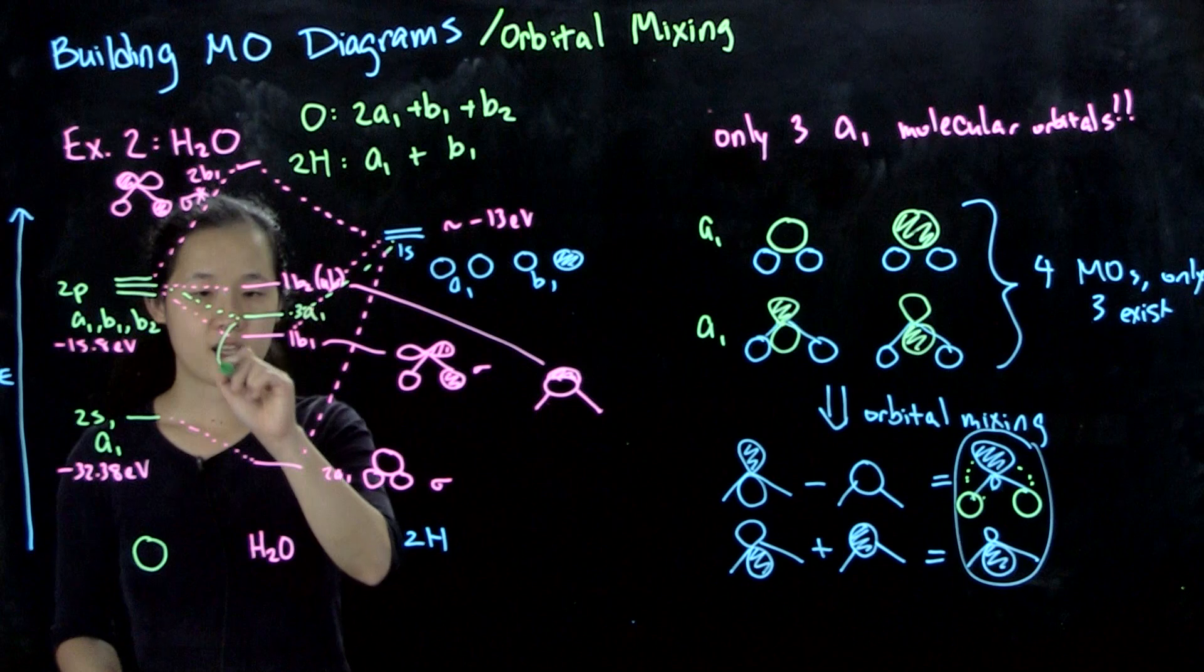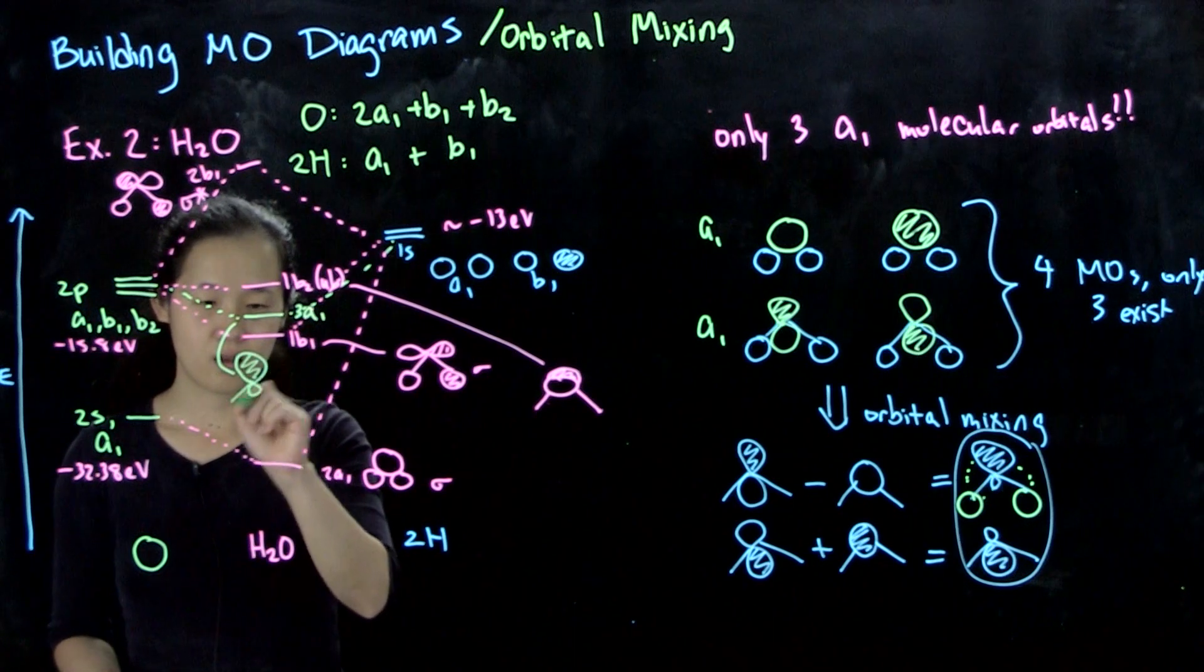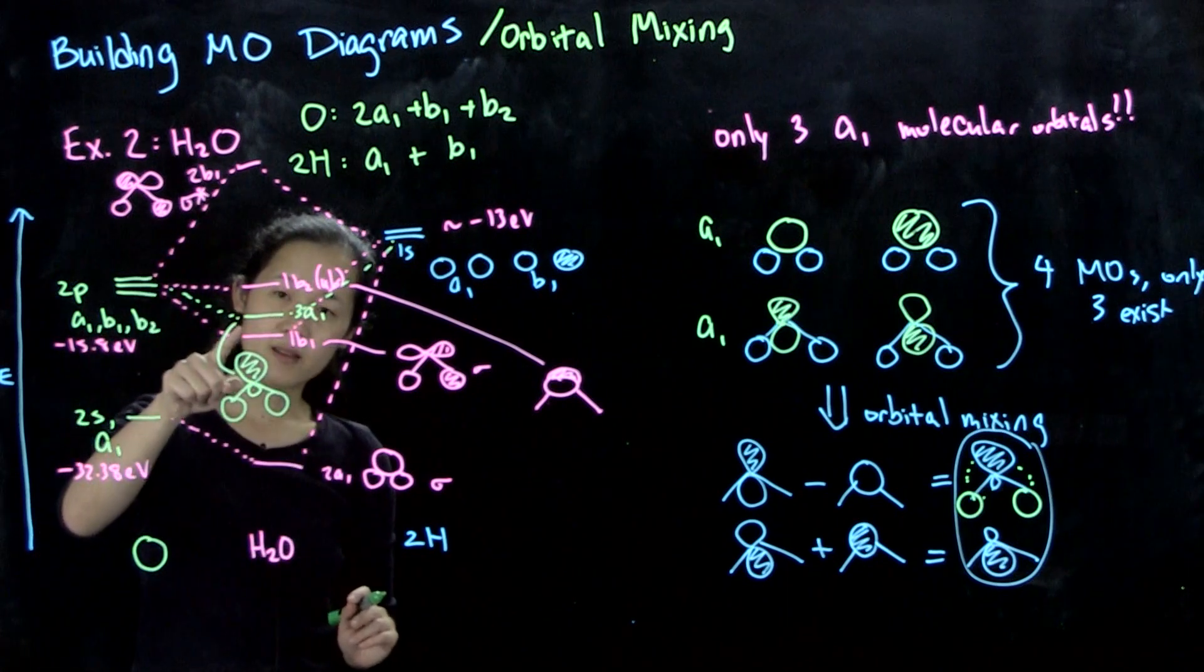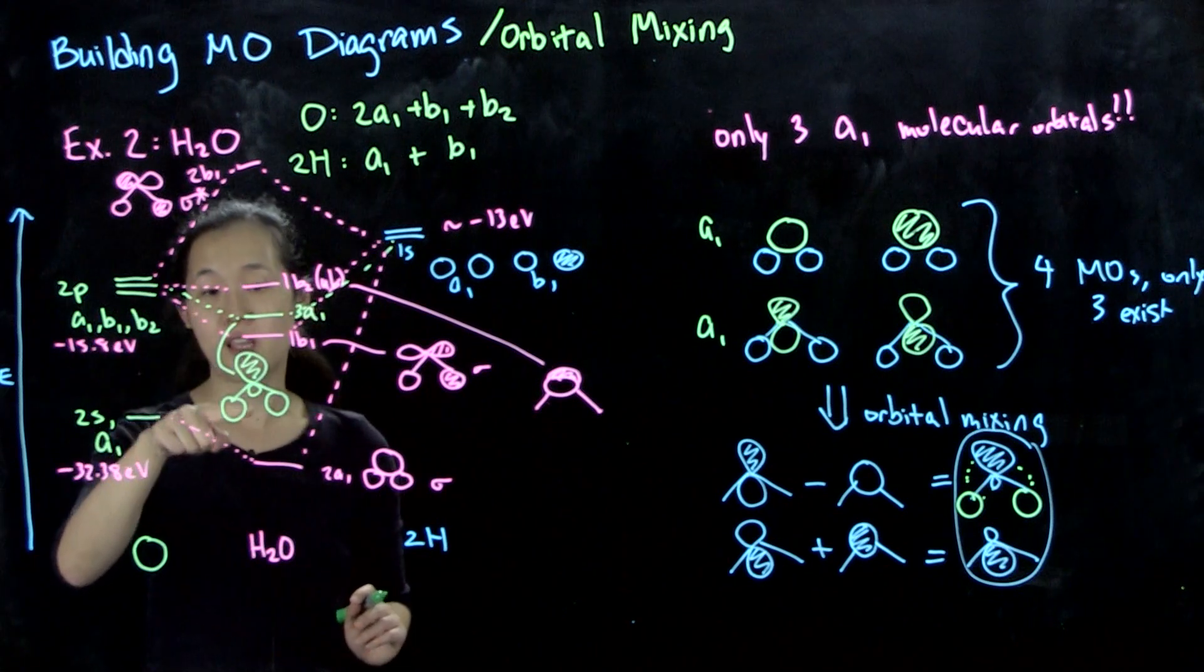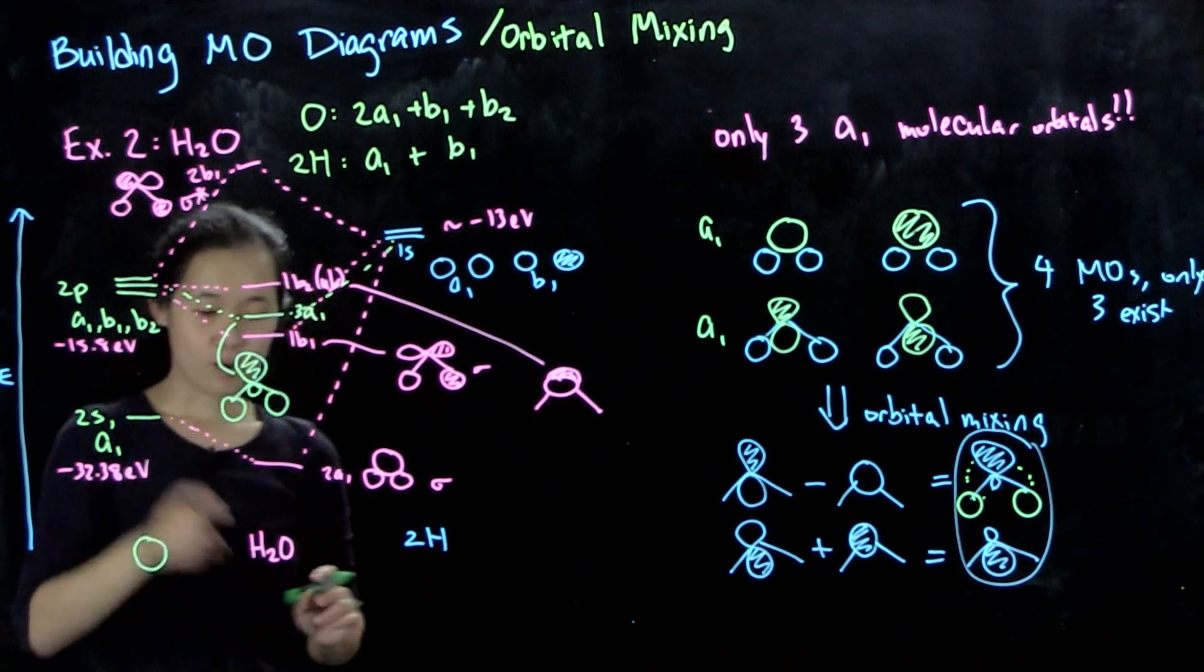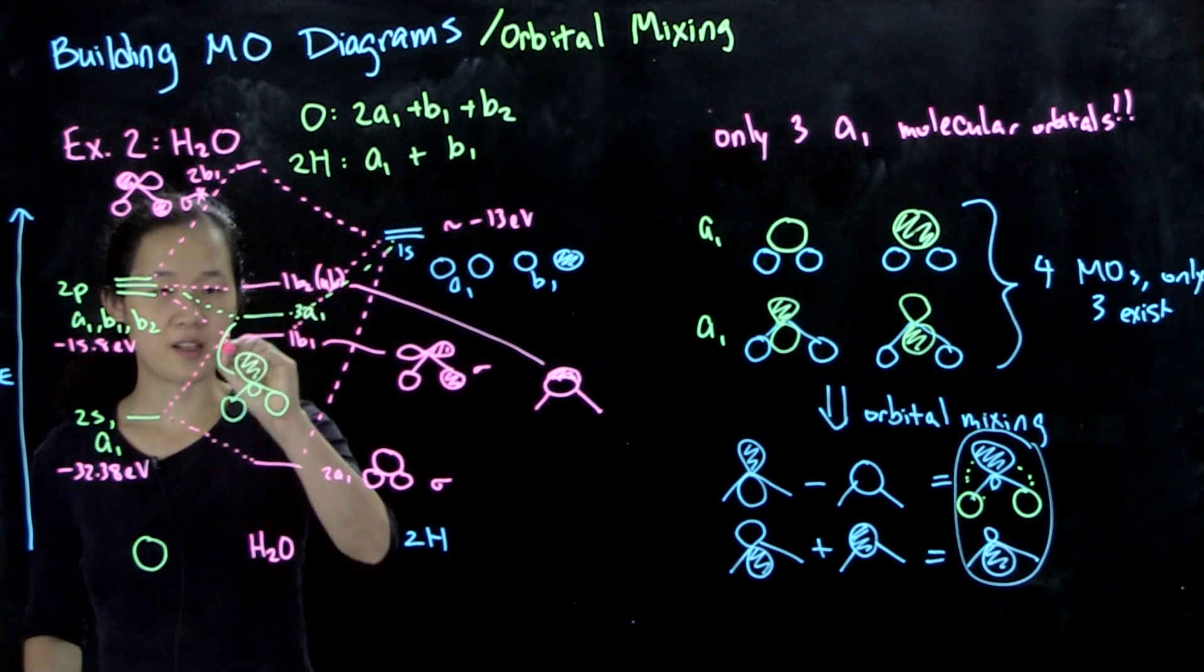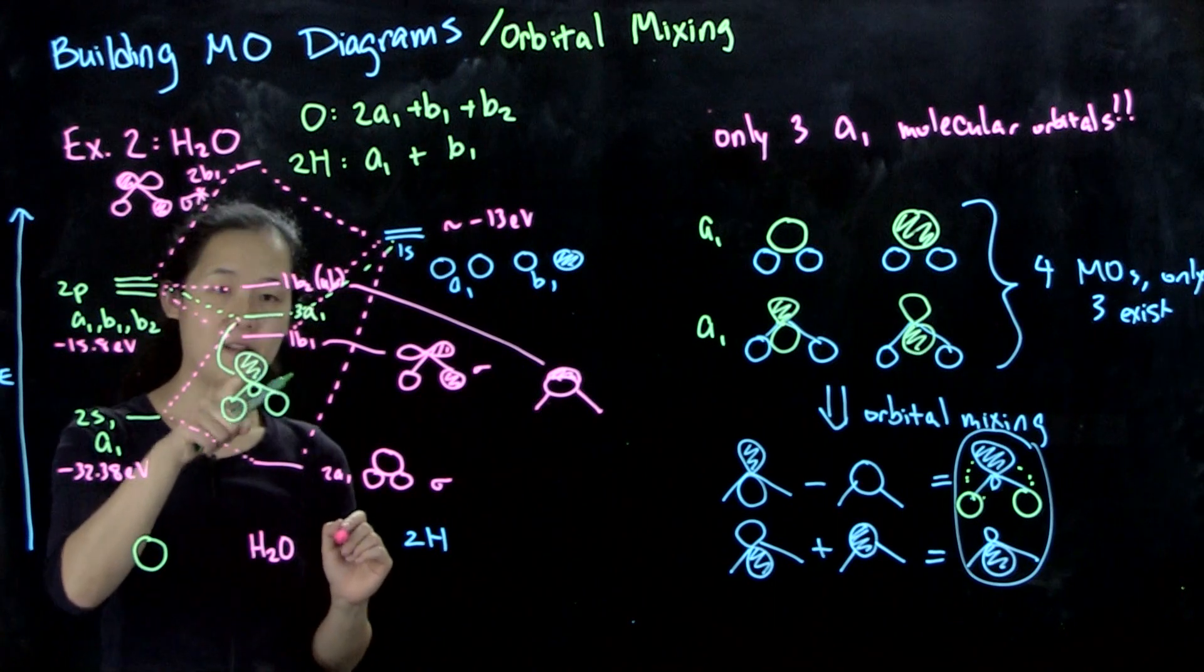This looks like - because it's coming down from the p, it's sort of pz bonding with the a1. In this case, this looks like anti-bonding with respect to the s because it has the big, fat, out-of-phase lobe.